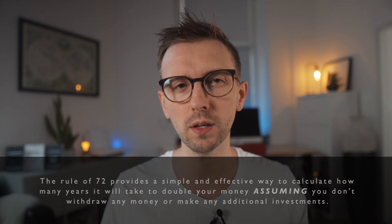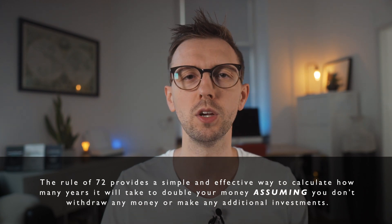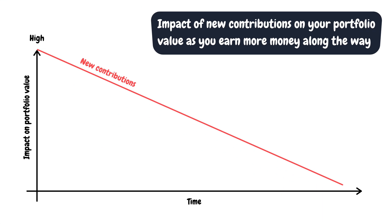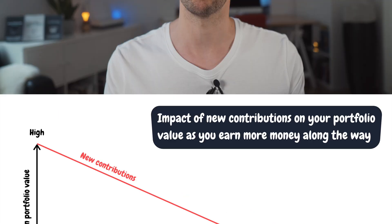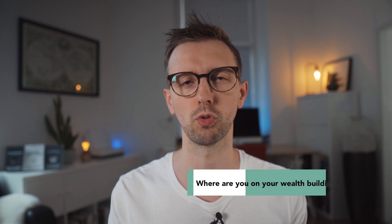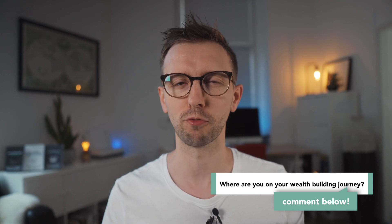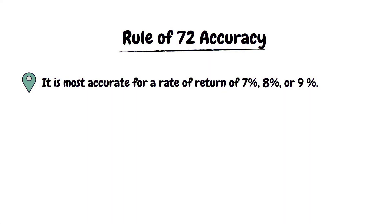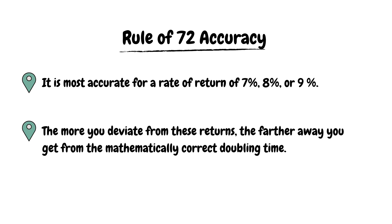I'd like to add a few more nuanced points here. First, the result you get from the Rule of 72 is the number of years it will take your investment to double, assuming you do not withdraw any money or make any additional contributions. This is very important to keep in mind, especially in your first few years of investing when you will very likely constantly add a significant amount of money to your portfolio as new money comes in from your income. Second, the estimate from the Rule of 72 is most accurate for rates of return of seven, eight, or nine percent per year.